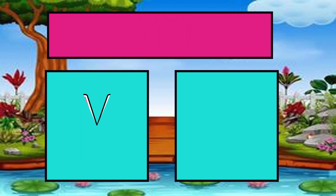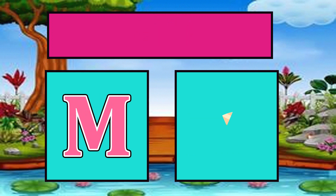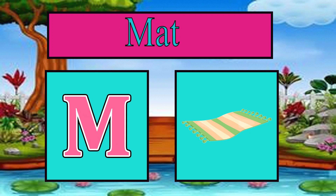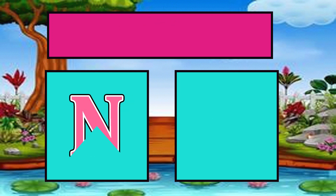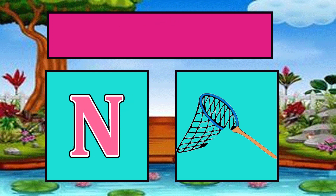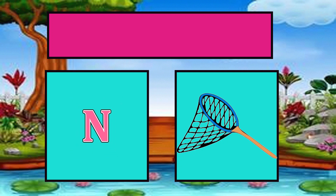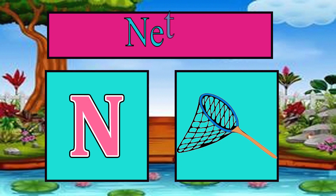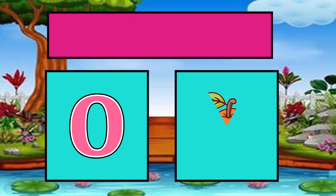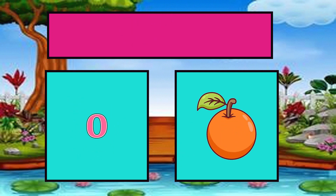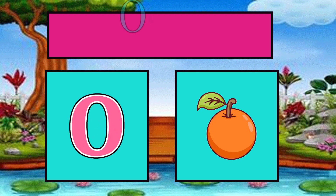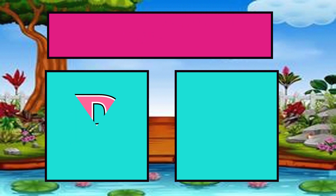M is for mat, m-m-mat. N is for net, n-n-net. O is for orange, o-o-orange.